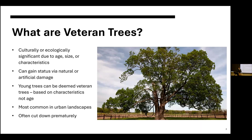Veteran trees can gain this status via natural or artificial damage. In urban landscapes, that means we can get it through maintenance like pruning branches. Young trees can be deemed veteran trees because it's not just based on age — it's also based on characteristics. Veteran trees are most commonly found in urban landscapes rather than rural ones, and they're often cut down prematurely due to their perceived risk. A municipality will typically look at a veteran tree and see it as a risk of falling or causing damage, and they'll likely prematurely fell the tree.